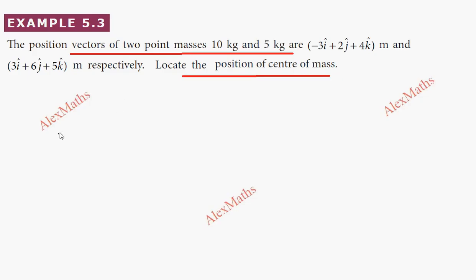So this is the formula, the vector formula: r vector equals m1 r1 vector plus m2 r2 vector, divided by m1 plus m2.